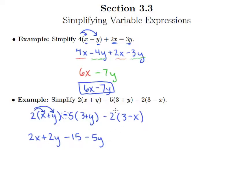Now we have negative 2 times 3, which is negative 6, so minus 6. Be really careful here: this negative 2 has to go through to the negative x as well. Think of it as negative 2 times negative x — a negative times a negative gives us a positive 2x. So whenever you have minus 2 times minus x, that just becomes plus 2x.